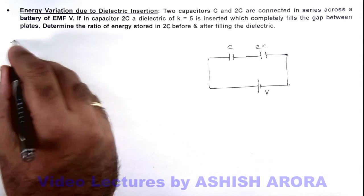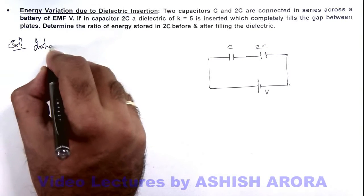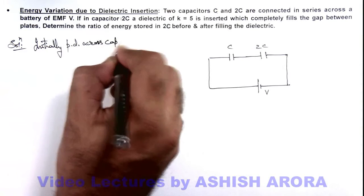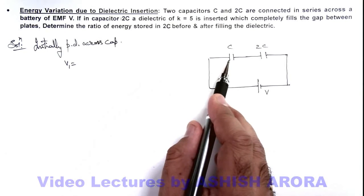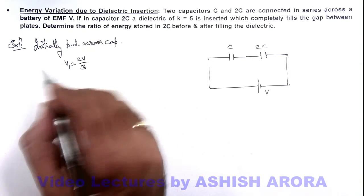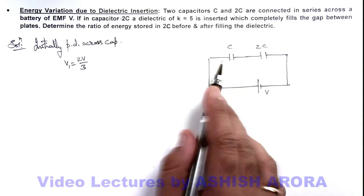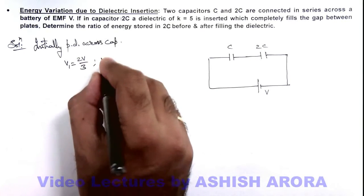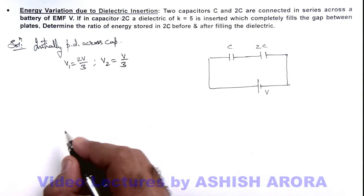In this situation, in solution we can first find out the initial state. So initially, if we calculate the potential difference across capacitors, this can be written as across the first capacitor the potential difference will be V multiplied by 2C upon 3C, that is 2V by 3. In series combination you can always directly calculate the potential difference as these are distributed in inverse ratio of capacitances. And here V2, the potential difference across this 2C capacitor, will be V by 3.